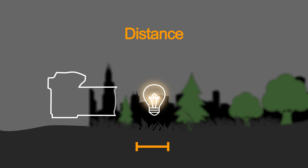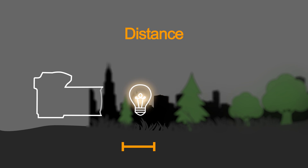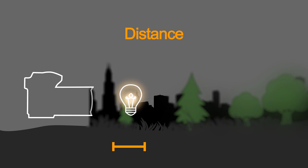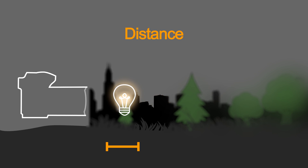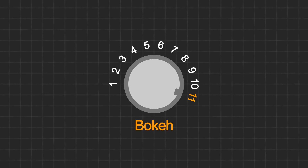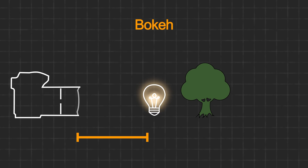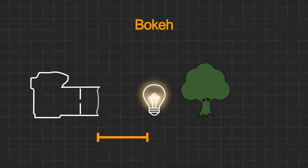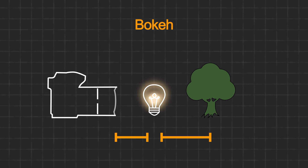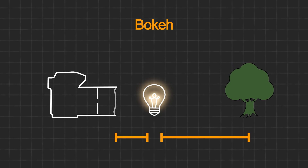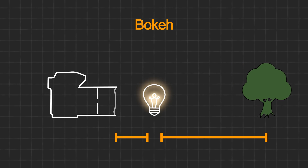In addition, the further the subject is away from the background, the more the background will be out of focus. So the target for maximum bokeh is the smallest distance between subject and camera and the largest distance between subject and background, coupled with a large aperture for a really shallow depth of field.